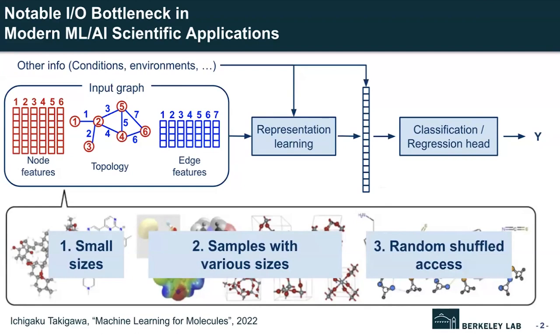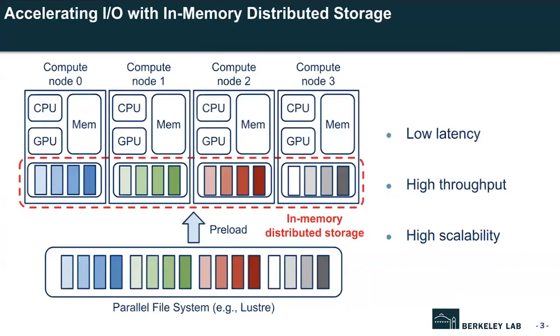However, in these scientific applications, IO is regarded as a notable performance bottleneck. The reason is that each sample size is very small and each sample varies in size, making it hard to fully utilize the performance of storage systems. Furthermore, because of stochastic gradient descent, the most common deep learning training method, reading operations for mini-batches are randomly shuffled before each training iteration.